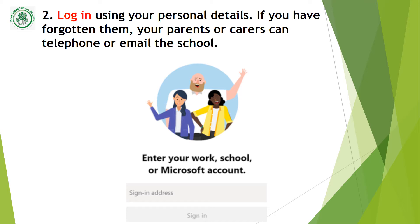If you don't have your login details anymore, you can get your parents to ring the school on 0121 4645662, or they can email the school at enquiry@moorgreenacademy.org, and then your teacher or somebody from the office can get in touch and remind you.